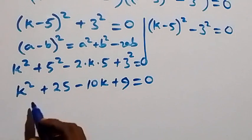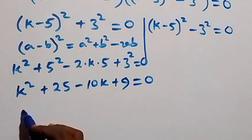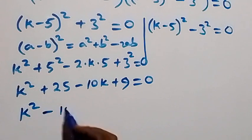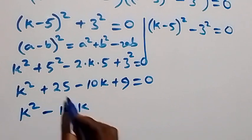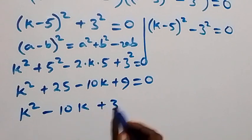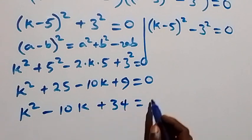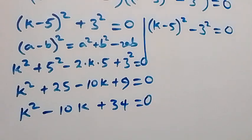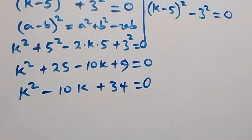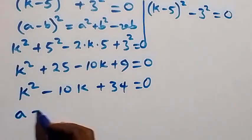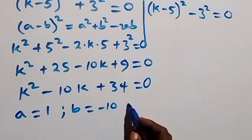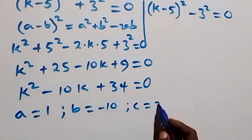This gives us k squared minus 10k, then 25 plus 9 becomes plus 34, equals to 0. This implies we have a quadratic equation where a equals 1, b equals minus 10, and c equals 34.